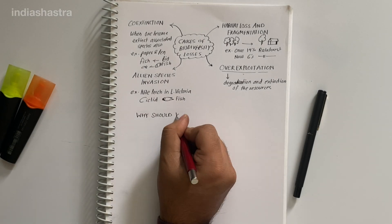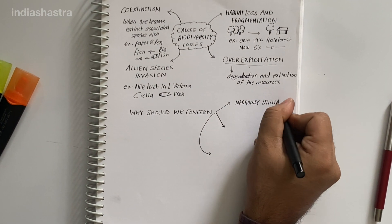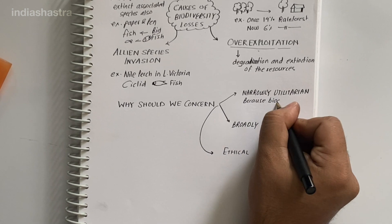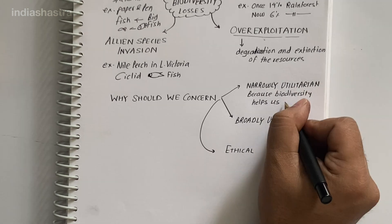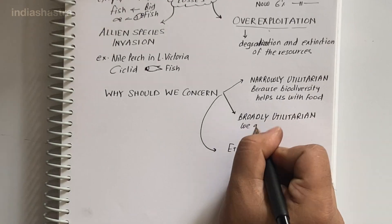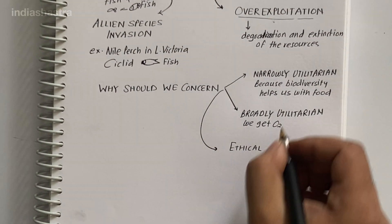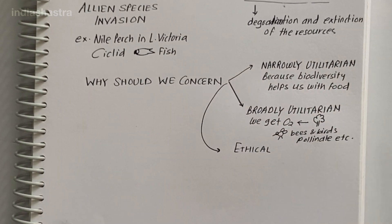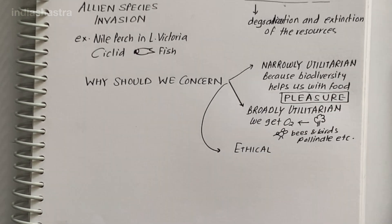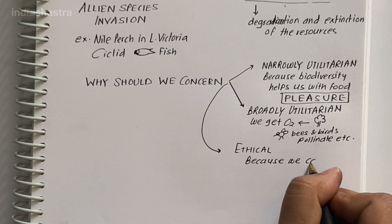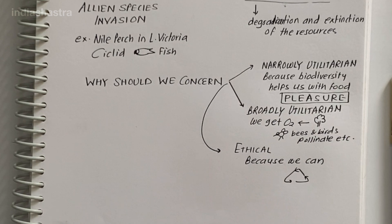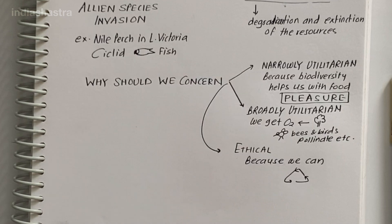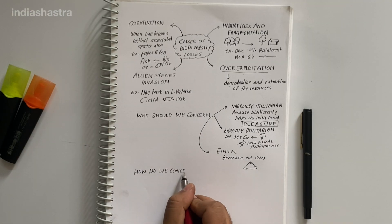Why should we conserve biodiversity? Conservation of biodiversity is considered under three categories: narrowly utilitarian, broadly utilitarian, and ethical. The broadly utilitarian argument says to conserve biodiversity because of the morals and responsibility that humans have towards nature and because biodiversity plays a major role in ecosystem services. The narrowly utilitarian criteria involve conserving biodiversity because of direct human needs. But we need to realize that every species has an intrinsic value even if it may not have current economic value to us. It is our moral duty to care for their well-being and pass on our biological legacy in good order to future generations.